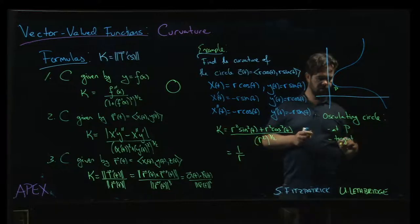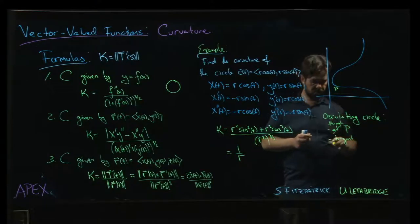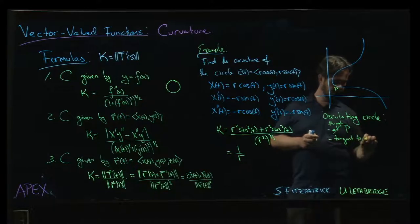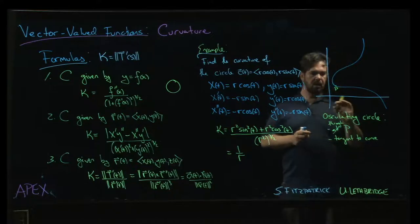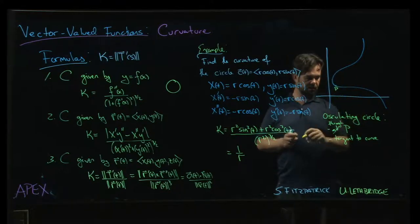Actually, it's through the point—so point P should be on that circle. It's tangent to the curve, and it should lie on the concave side of the curve, the inside of the curve.